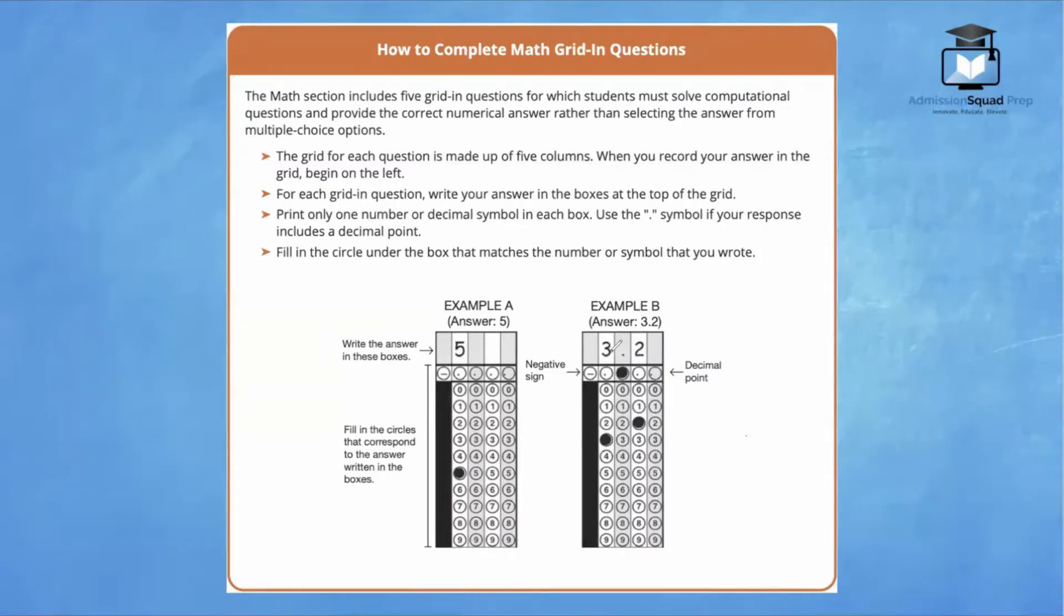The number 3.2 is going to be written with the 3 in the white box, the decimal point in the gray box, and 2 in the white box. You're going to bubble in the 3 down here, bubble in the decimal point, and bubble in the 2. It's okay to leave this box blank because you didn't need it, and we leave this box blank because the number was positive and not negative.